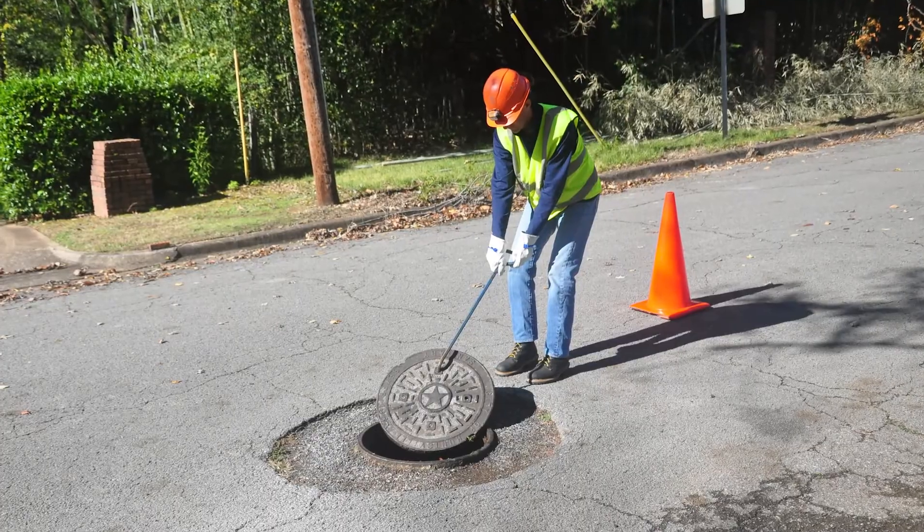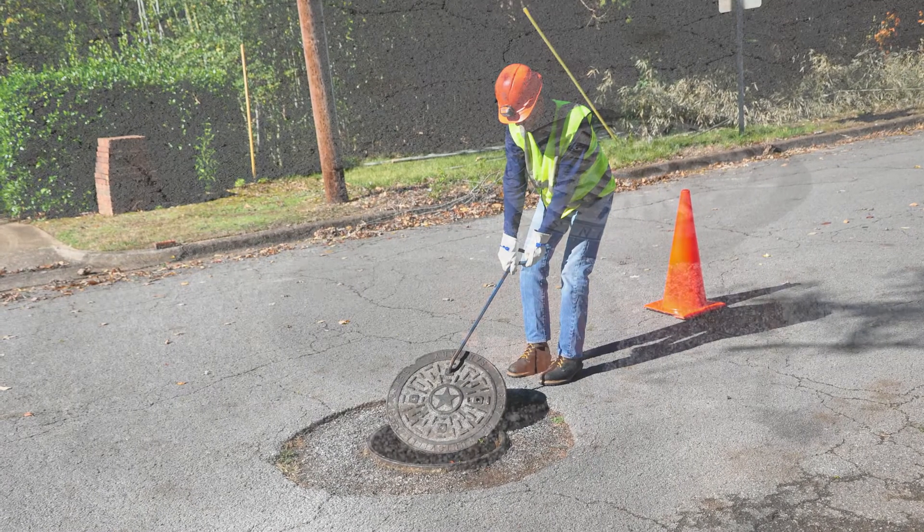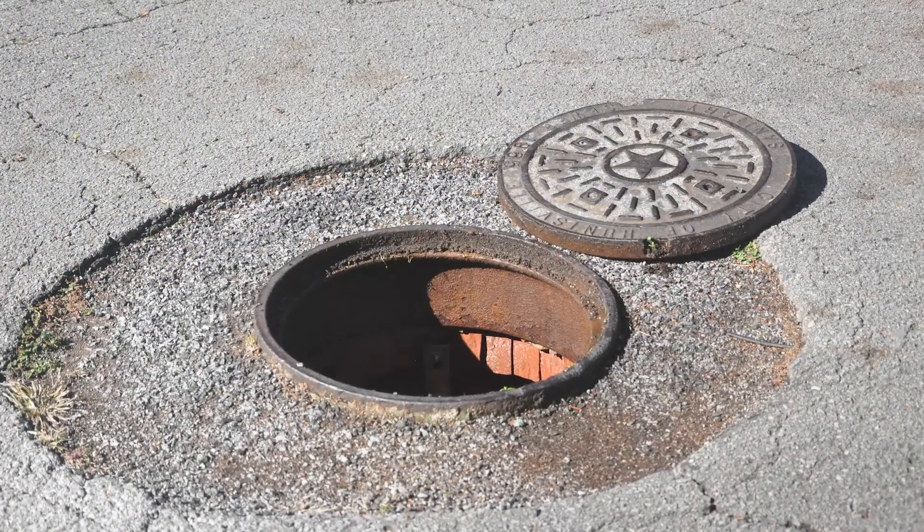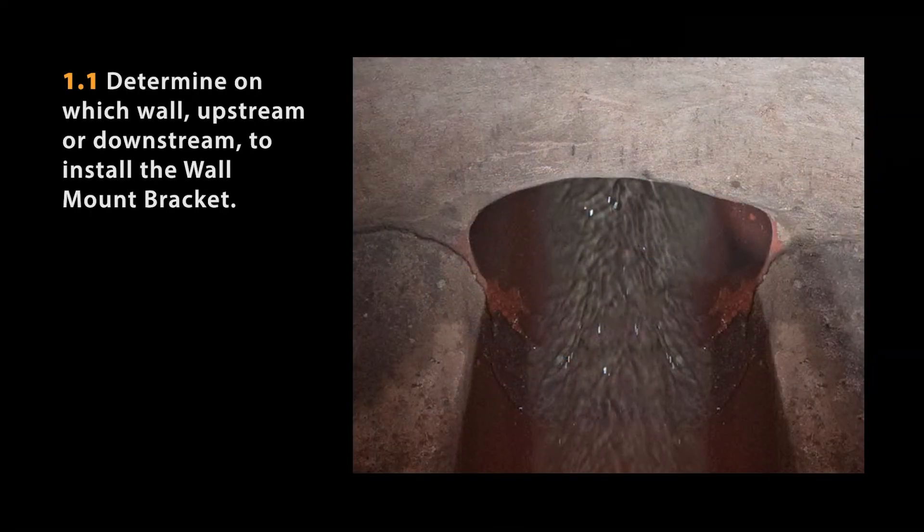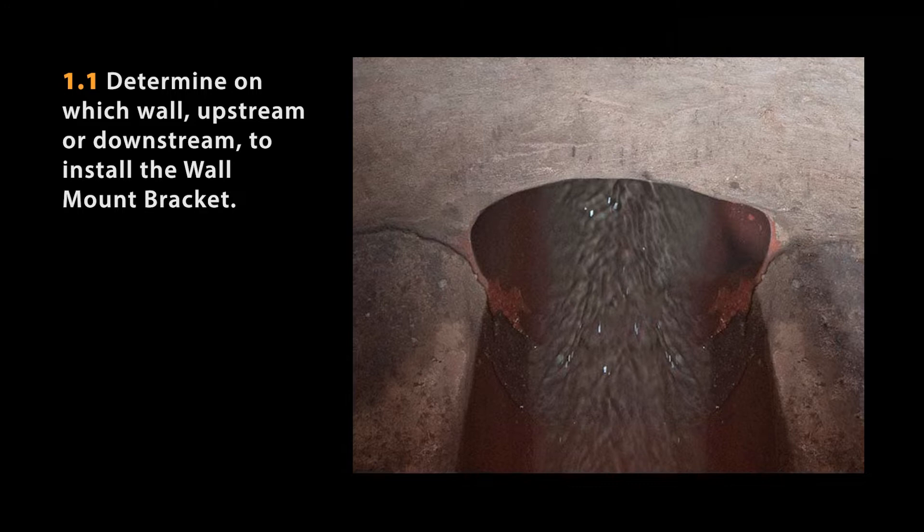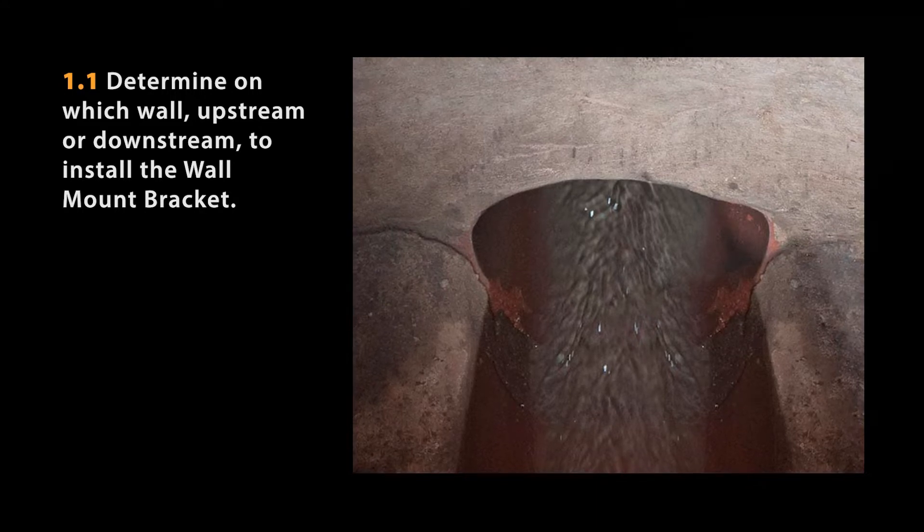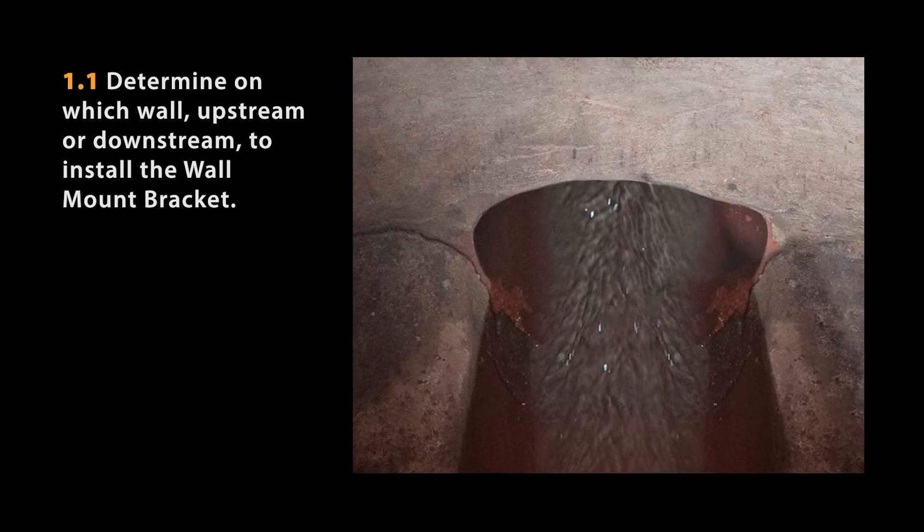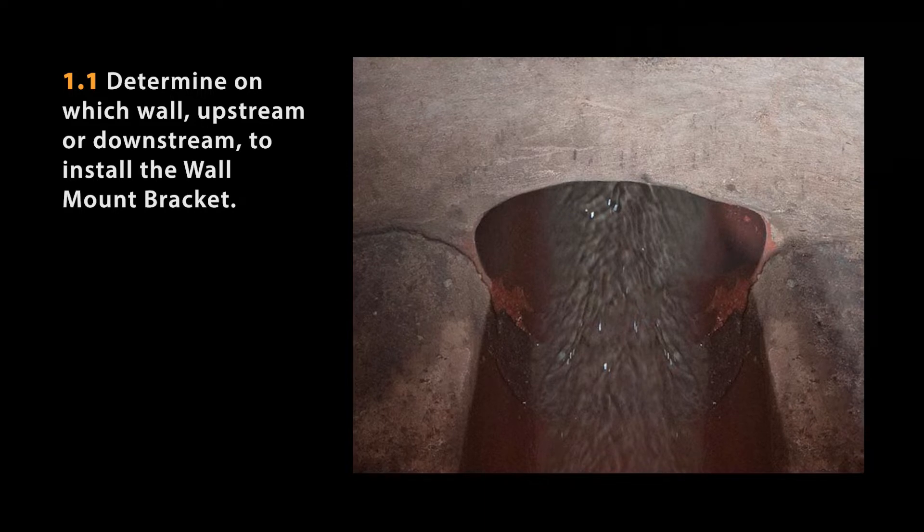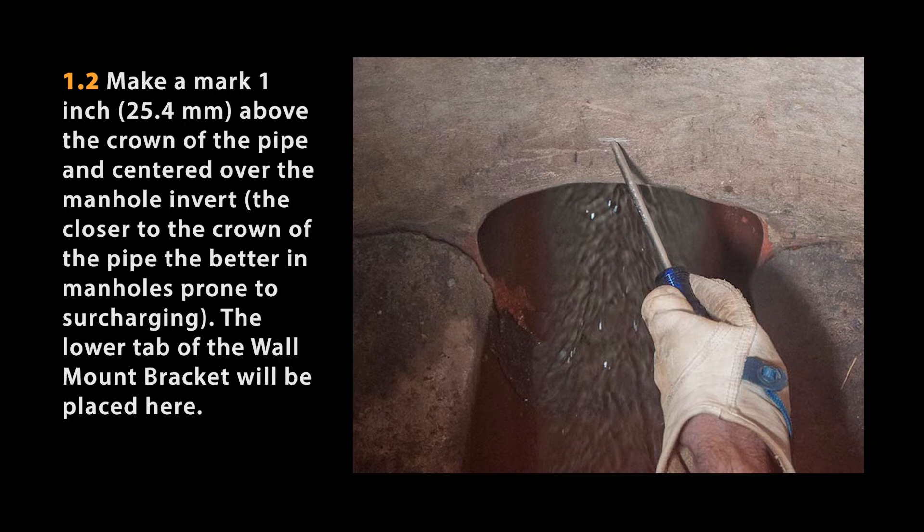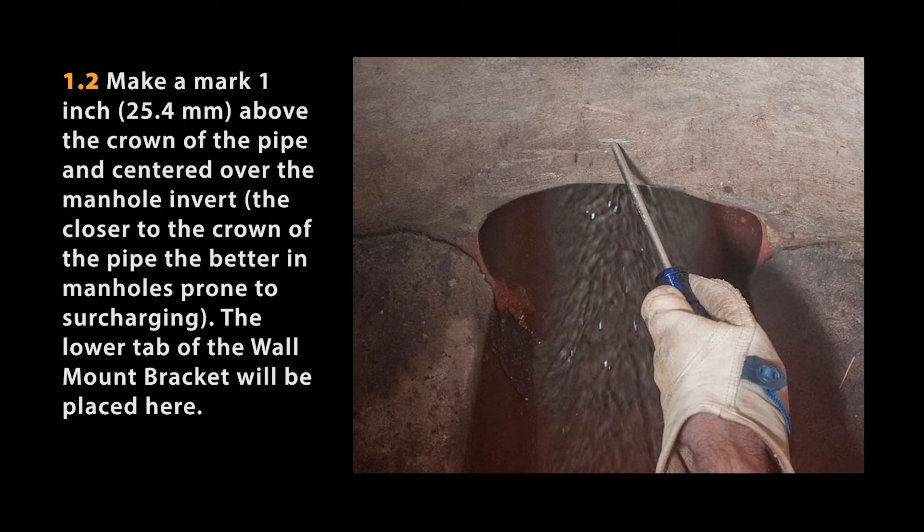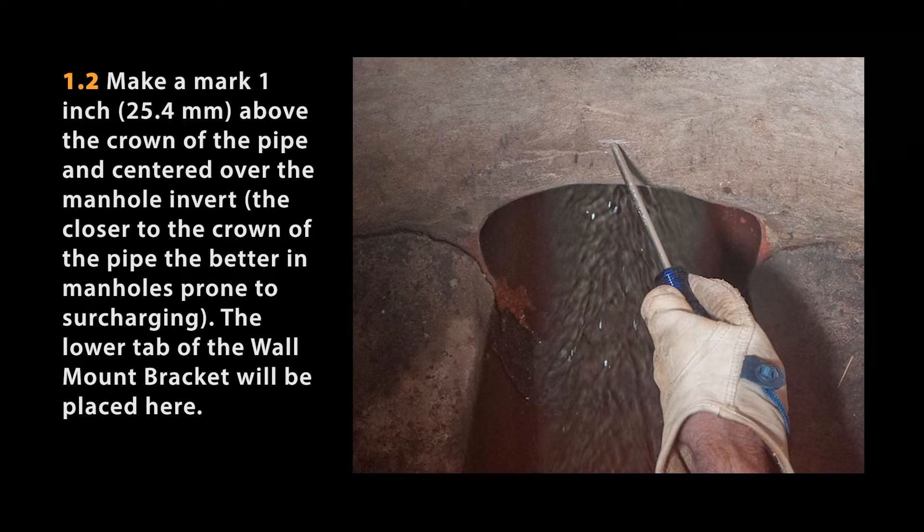Once on site and ensuring that you are following all required safety procedures, descend the manhole to install the wall mount bracket. Determine whether to install the wall mount bracket on the upstream or downstream wall. In manholes prone to surcharging, ADS recommends installing the bracket on the downstream side of the manhole. Make a mark 1 inch or 25 millimeters above the crown of the pipe and centered over the invert.